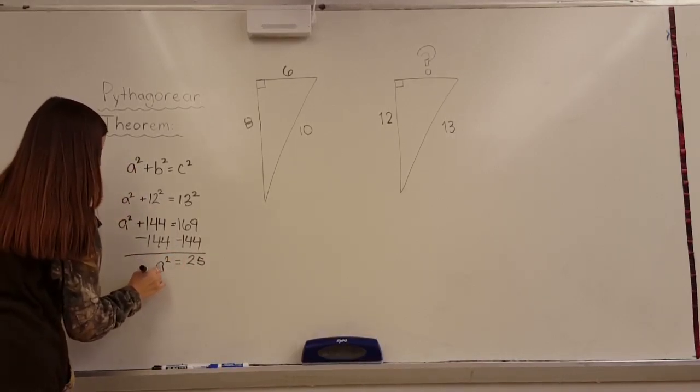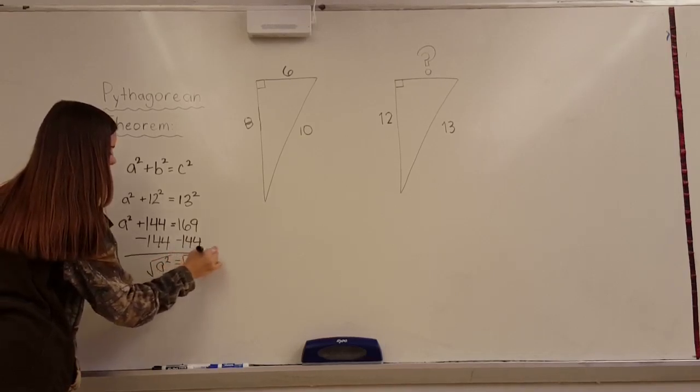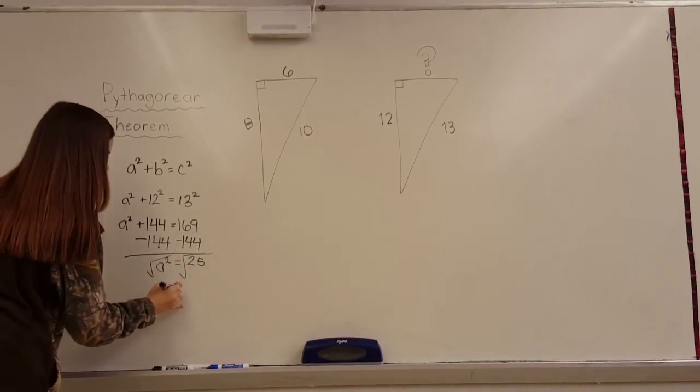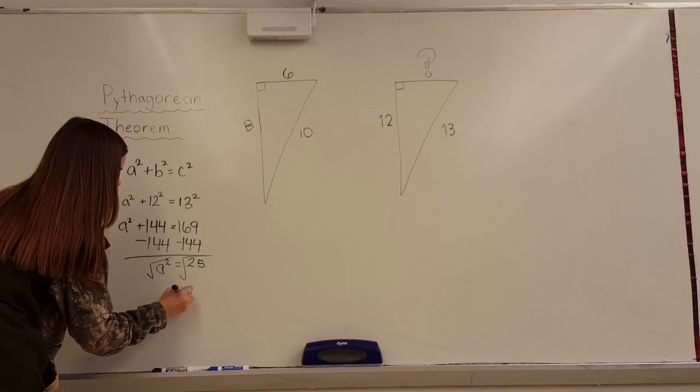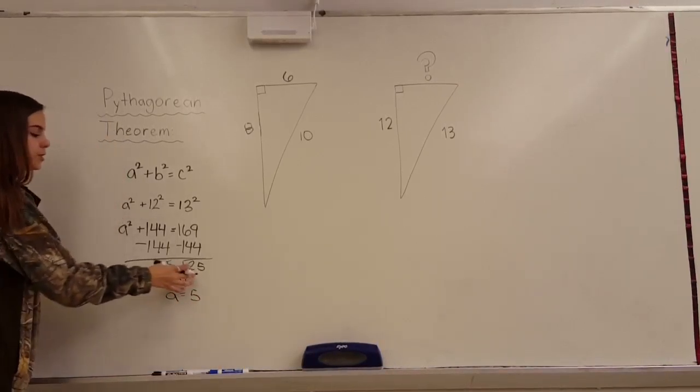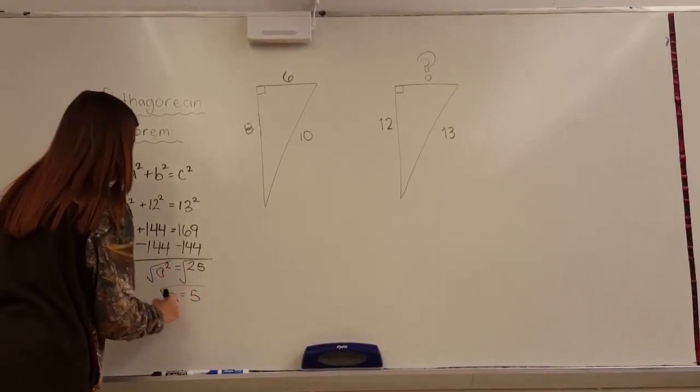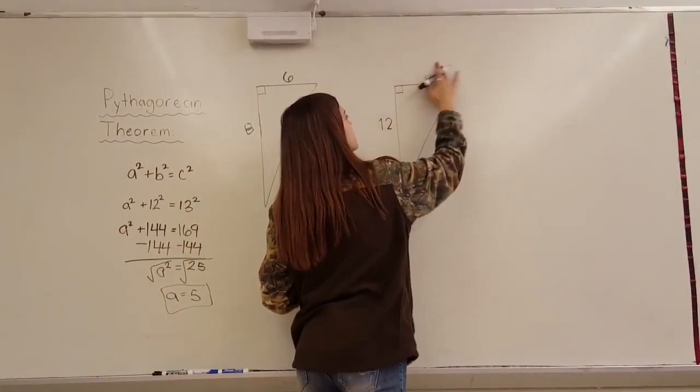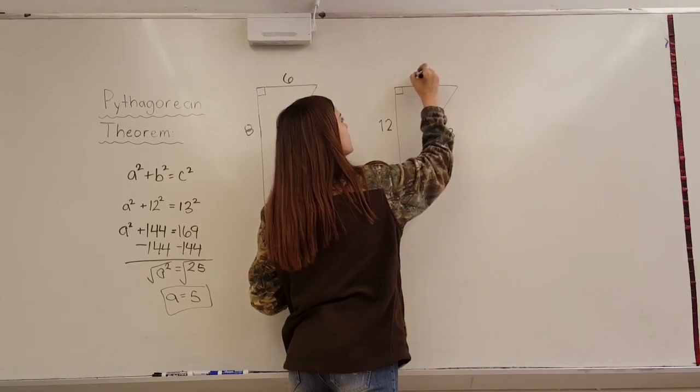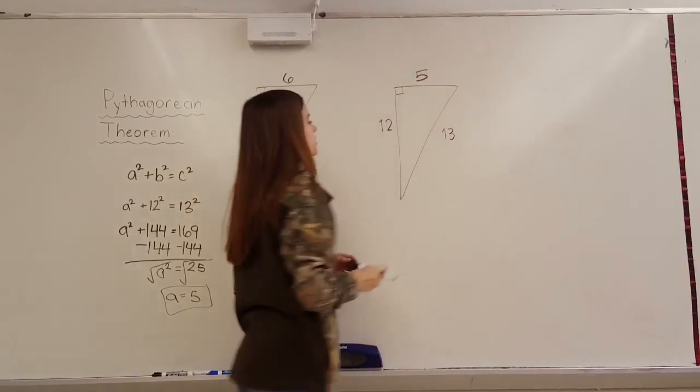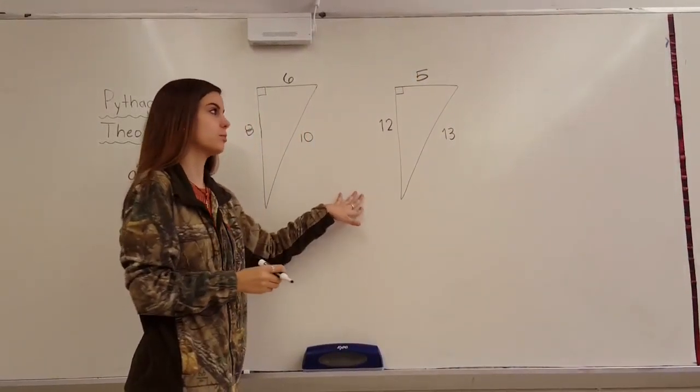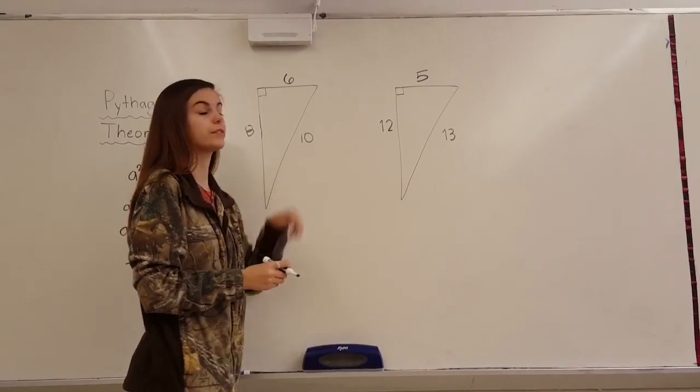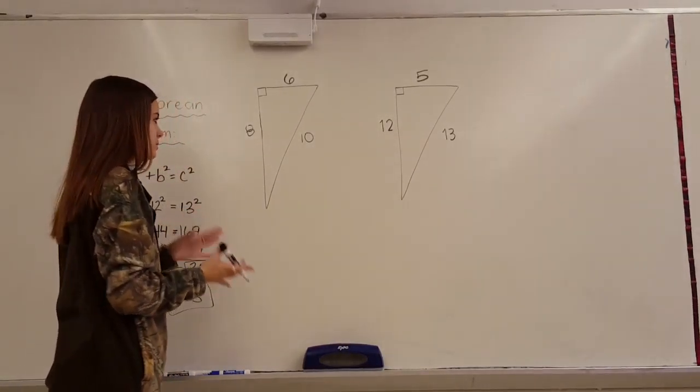So, once again, we just put a square root symbol over both of them. That cancels out. And a equals 5, which is the square root of 25. So, then once again, this becomes 5. And as you can see, this is an example of another triple because it works out perfectly between the three numbers and there are no decimals.